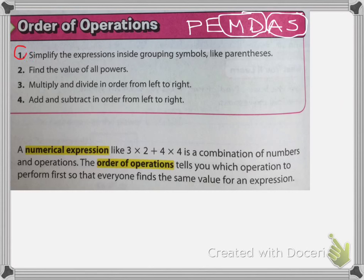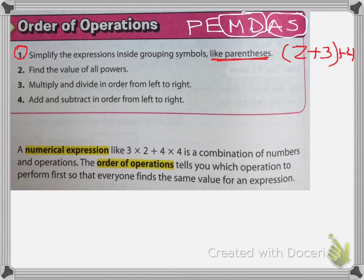In order: 1, 2, 3, 4. The very first thing you should do is simplify the expressions inside grouping symbols like parentheses. Parentheses look like this — if you have (2 plus 3), that is something you need to do before you add the 4 to it. The next step says to find the value of all of the powers, so if you have 4 squared plus 2, you need to do the exponent first.